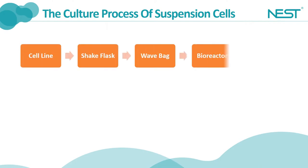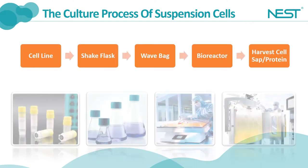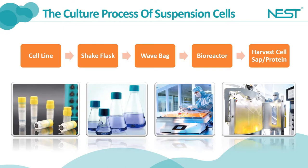Let's have a look at the culture process of suspension cells. Starting from a cell line, first is cell recovery, followed by transfection. The aim of transfection is to implant the required exogenous genes into the cells to enable the cells to steadily express the required proteins. After the transfected cell line is screened out, culture expansion of these cells is performed in shake flask.